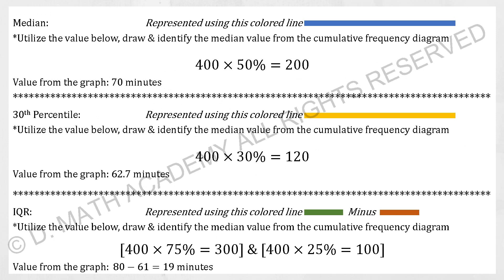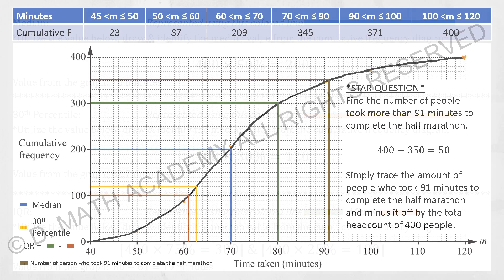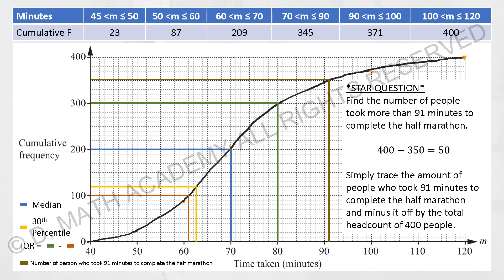Right, so for the last part, which is the star question that always appeared when they try to ask this question. The keyword is actually hidden in the numbers of people who took more than 91 minutes. So from 91 minutes, you're required to draw it back up.